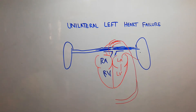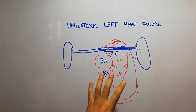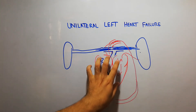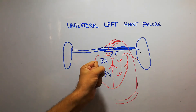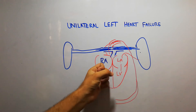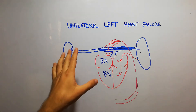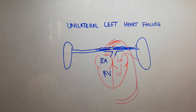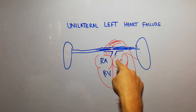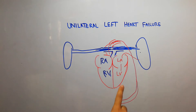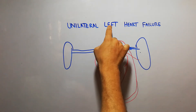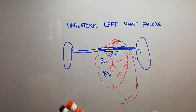If the left side of the heart has failed — for example due to myocardial infarction or any other reason — the right side of the heart will continue to pump blood into the lungs. However, blood will not be able to come back into the left ventricle because the left ventricle has failed; there is unilateral left side failure.